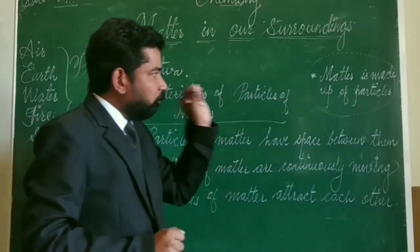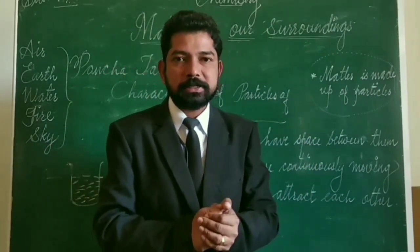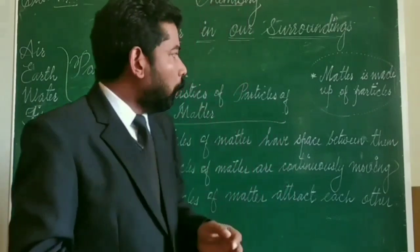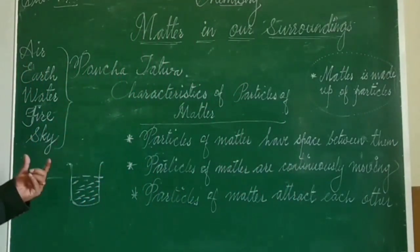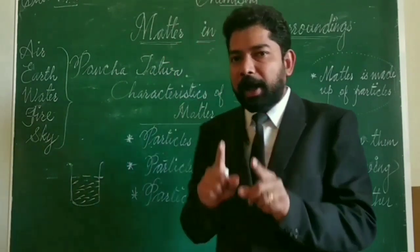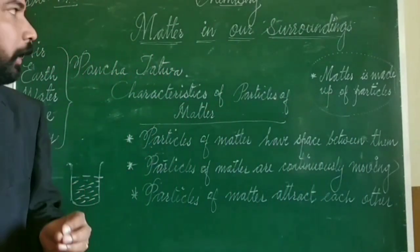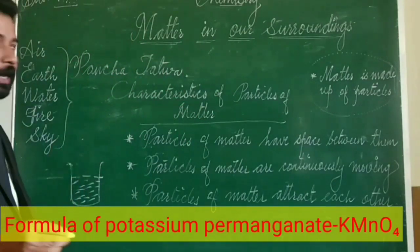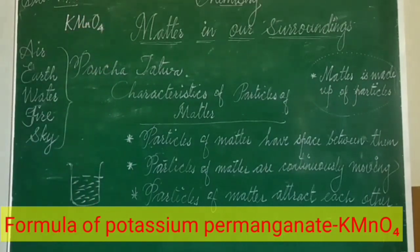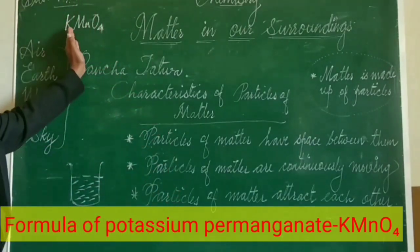Now we should know what will be the size of these particles. Let us take another experiment. Take a 100 ml beaker filled with water, and add two or three crystals of potassium permanganate — remember, its molecular formula is KMnO₄ and its color is purple.